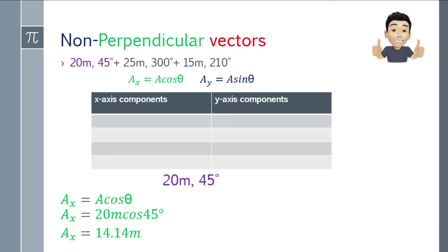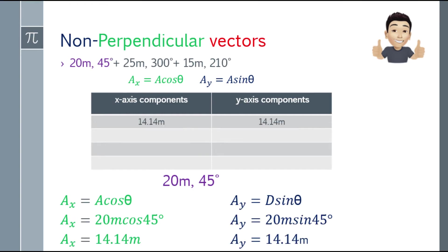Let's break them down one by one. First: 20 meters at 45 degrees. For the x component: ax = 20 cosine 45° = 14.14. For the y component: ay = 20 sine 45° = 14.14 as well, since it's a 45-degree angle. Let's put those in the table — 14.14 on the x-axis and 14.14 on the y-axis.